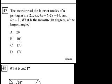Problem 47. The measures of the interior angles of a pentagon are 2x, 6x, 4x minus 6, 2x minus 16, and 6x plus 2. What is the measure in degrees of the largest angle? So first of all, we have to remember what is the sum of the interior angles of a pentagon. And that's where I always just draw an arbitrary pentagon.